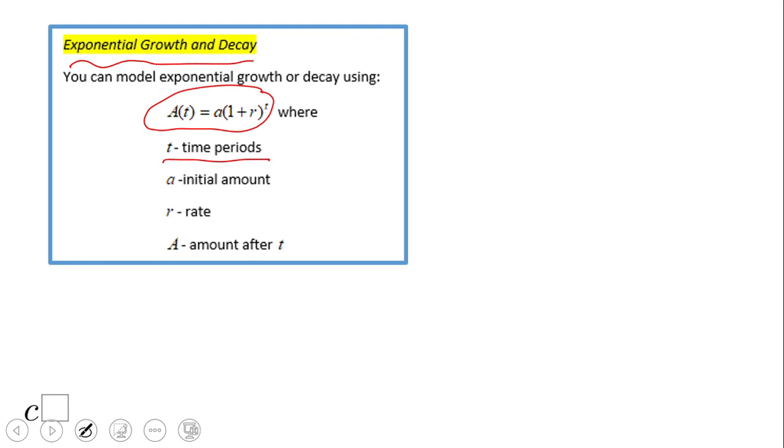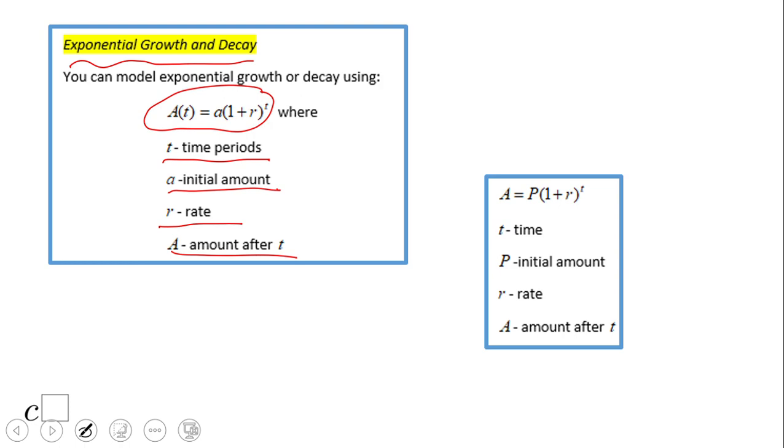T is the time periods, usually years, but it can also be days, hours, whatever. A is the initial amount, r is the rate which usually is in percentage, and in this video clip we're going to look for the final answer which is A, the amount after t time periods.